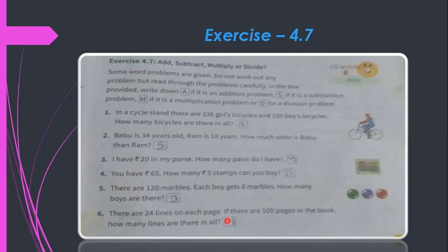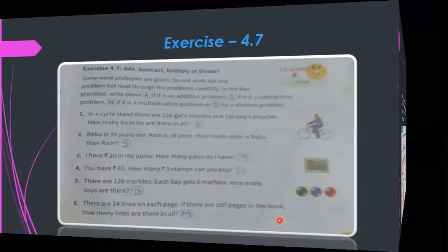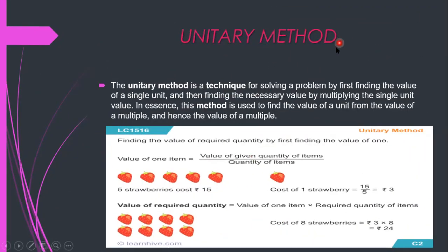Sixth problem: There are 24 lines on each page and there are 100 pages in a book — how many lines are there in all? You need to do 100 × 24, so this is a multiplication problem. Write M.